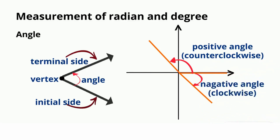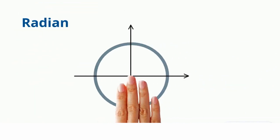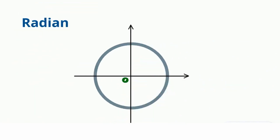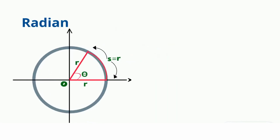Next we are going to see radian. See here — a circle with origin O and radius r. We draw a radius, then an arc s in the circle such that the arc length s is equal to the radius r. The ends of the arc are connected to the origin, and the angle between the two radii is theta — that is one radian. Theta equals one radian when arc length s equals radius r.